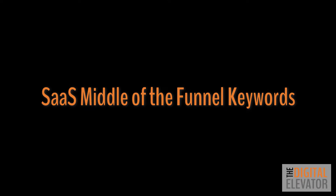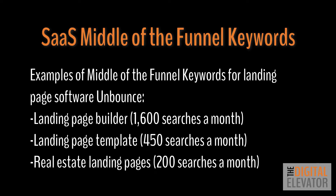Middle of the funnel content for SaaS can prove to be some of its most important in terms of the sales funnel. These searchers are aware that there are software solutions for the problems that they have, but they haven't yet narrowed down their searches to any specific brands and may still be a few days, weeks, or even months out from doing so. For Unbounce, middle of the funnel keywords they rank for include landing page builder — 1,600 searches a month — landing page template — 450 searches a month — and real estate landing pages — 200 searches a month. These searchers are much closer to our commercial keyword category and are discovering the different types of options they have should they want to purchase a software that meets their needs. Understanding where your customer's needs are will best position you to craft content to rank for many different types of middle of the funnel keywords.